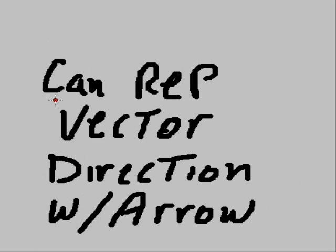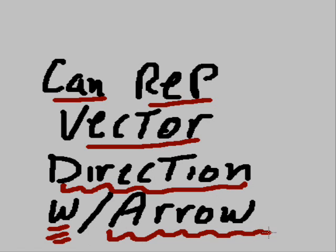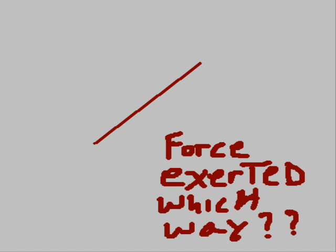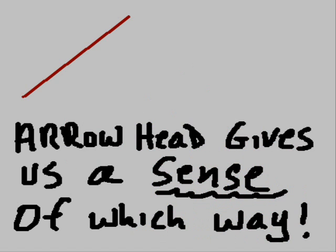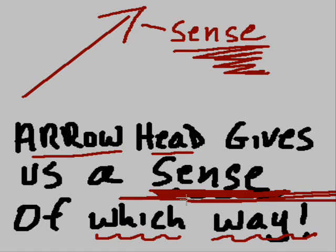You can represent vector direction with an arrow. Here's a vector — which way is the force being exerted? The arrowhead gives us a sense of which way. So what do we call this arrowhead? We call it the sense, because it gives us a sense of which way the vector is pointing.